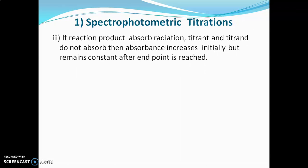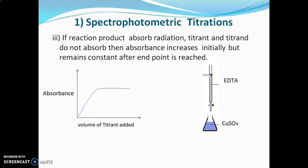Third type: if the reaction product absorbs radiation but the titrant and analyte do not, then absorbance initially increases but remains constant after reaching the end point. Example: titration of copper sulfate against EDTA. The reaction product absorbs radiation, while both EDTA and copper sulfate do not. As the product forms, absorbance increases; once all copper sulfate is consumed, further addition of EDTA does not affect absorbance, so it remains constant after the end point.